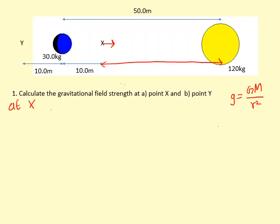The gravitational field strength there is going to be G, which is 6.67 times 10⁻¹¹, times 120 over 40², which is the distance between those two.